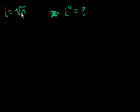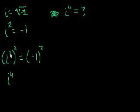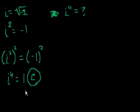Let's square both sides of this equation. i squared will be equal to negative 1. Now let's square both sides of this equation again. i squared squared is equal to negative 1 squared. Well, i squared squared is just i to the 4th, right? And that equals negative 1 squared, which is just equal to 1. And we're done. That's choice C.